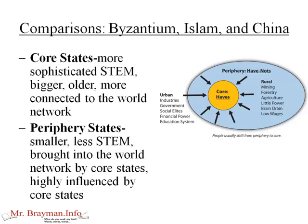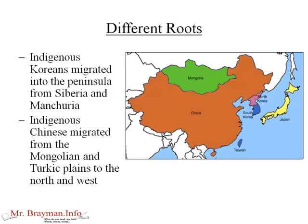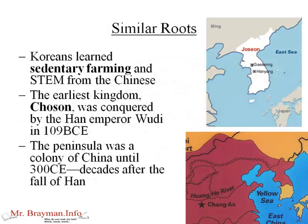One of the things I want to keep in mind from the get-go is that Korea and China have different roots. Indigenous Koreans migrated into the peninsula from Siberia and Manchuria, so they came by a more northerly and easterly route, whereas indigenous Chinese migrated more from the plains of the west and north. There are some inherent ethnic differences, but Chinese influence was very early on. Koreans learned sedentary farming and STEM practices from the Chinese all the way back into period one and the early part of period two of world history.